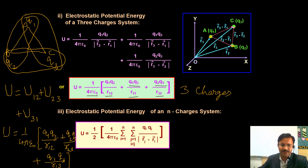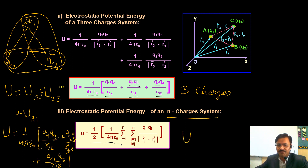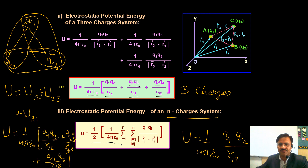If n number of charge particles are there, the potential energy can be written using the general expression. Always use the simple formula U = 1/(4πε₀) × q1·q2/r12 as it will help you find the potential energy of a system of charges.